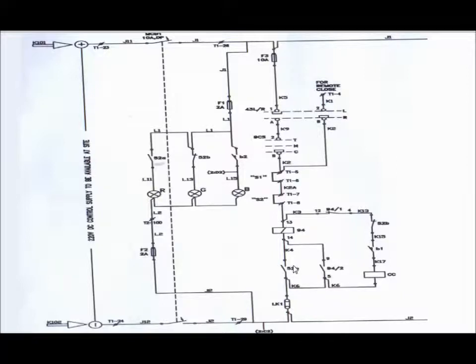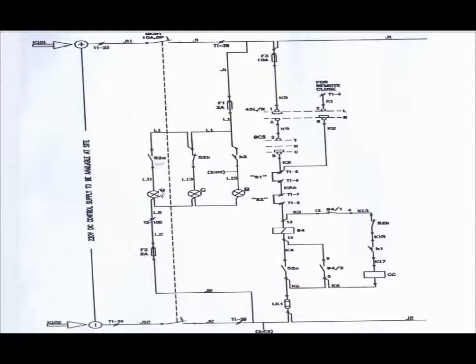As the circuit breaker turns ON, the 52B auxiliary contact will move to NC position. As the auxiliary contact is in NC position, the red light will glow, indicating the breaker is in ON condition.